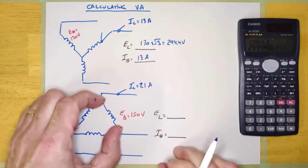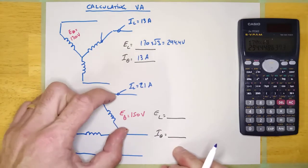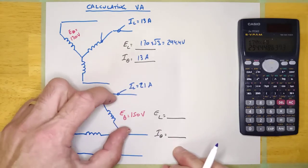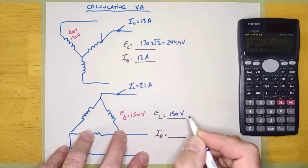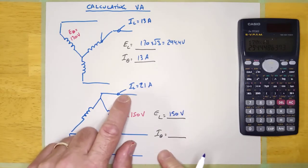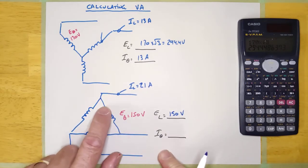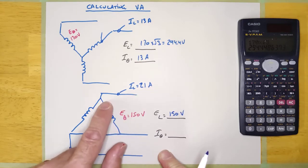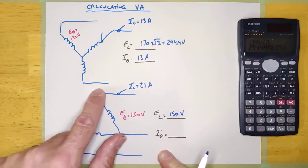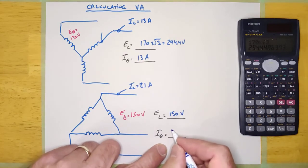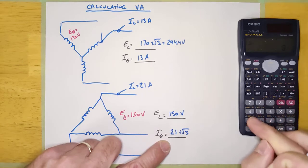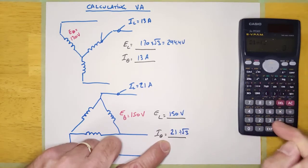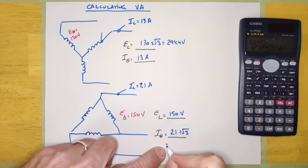Now, this one here — I have a phase voltage of 150. If I move my meter, it's going to be the same, so this is going to be 150 volts. And I have a line current of 21. So is my phase current going to be more, less, or equal to 21? It's going to be less because those two currents come together to equal 21. Since it's less, I divide by root 3. So 21 divided by root 3 equals 12.12 amps.